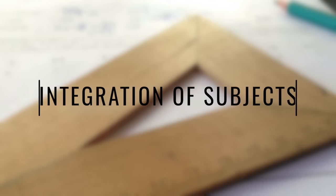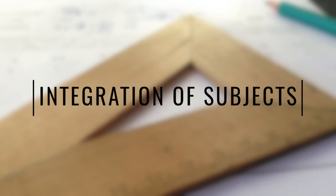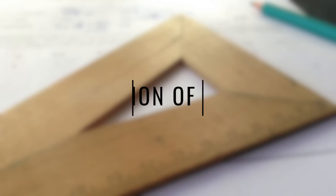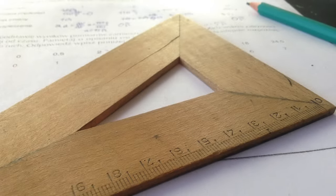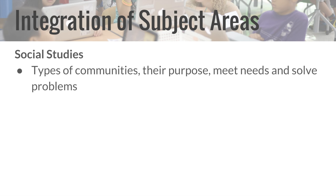To answer the driving question, students acquired knowledge and skills from multiple subject areas. For social studies, students had to learn about the different types of communities and why people belong to them, how communities meet needs and solve problems, how groups of people can have an impact and help solve a problem in their community, and how these changes can have an impact for years to come.